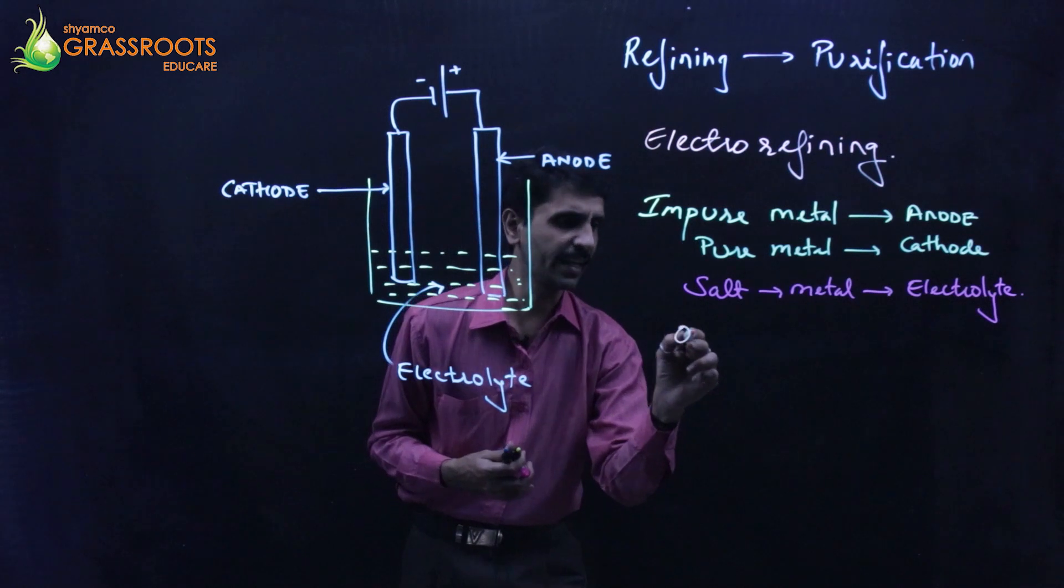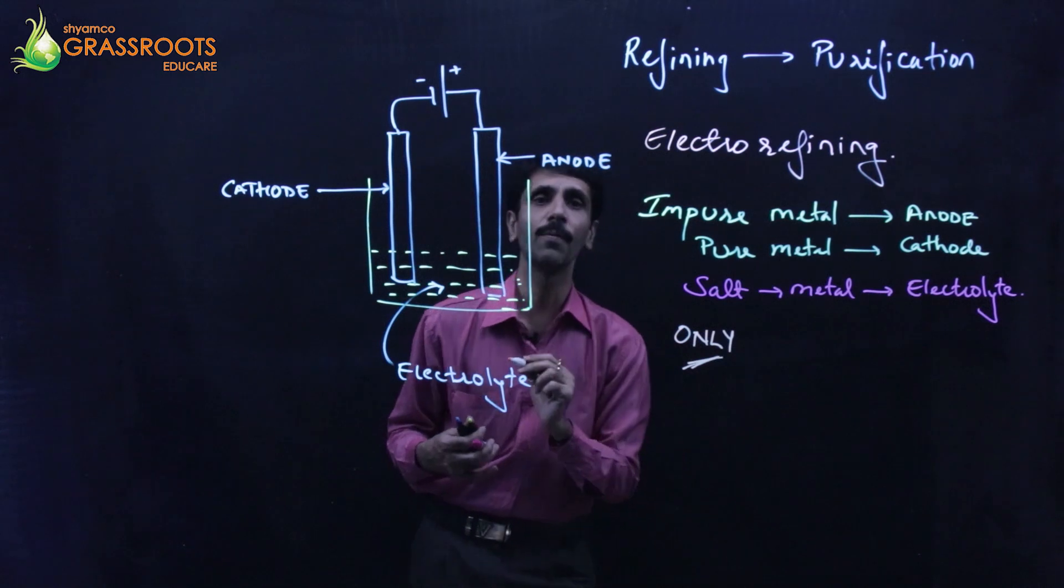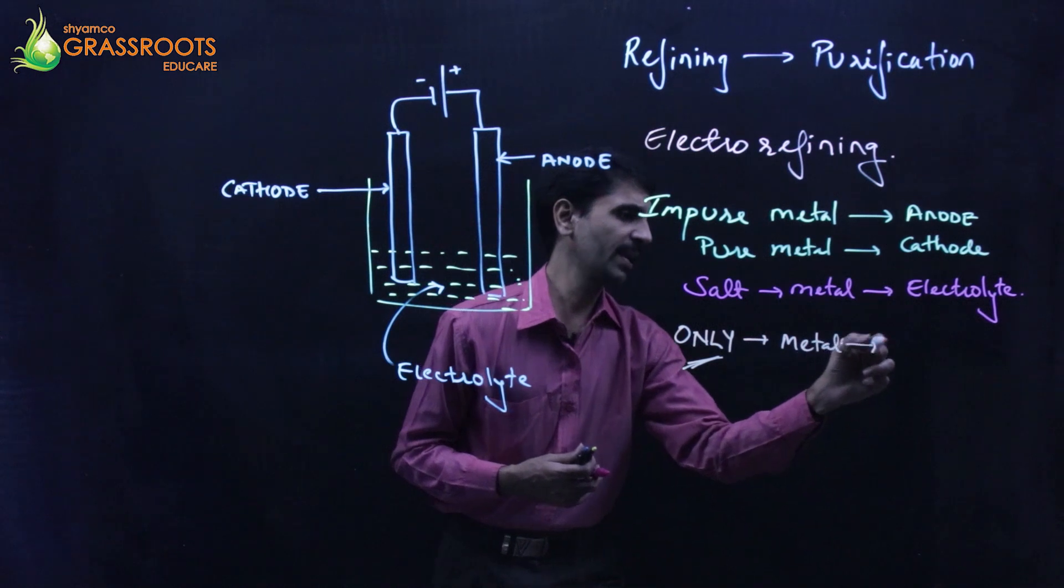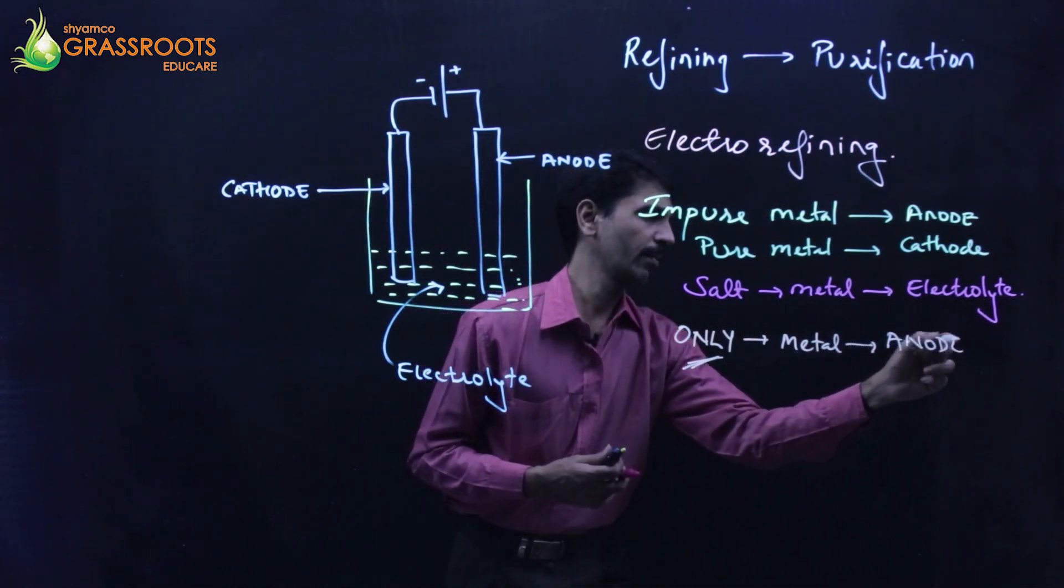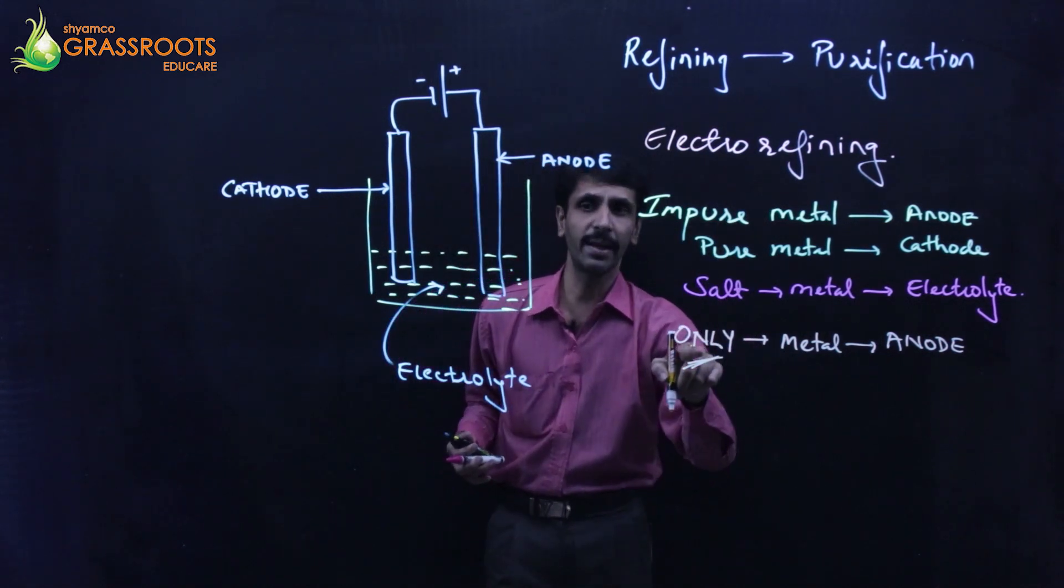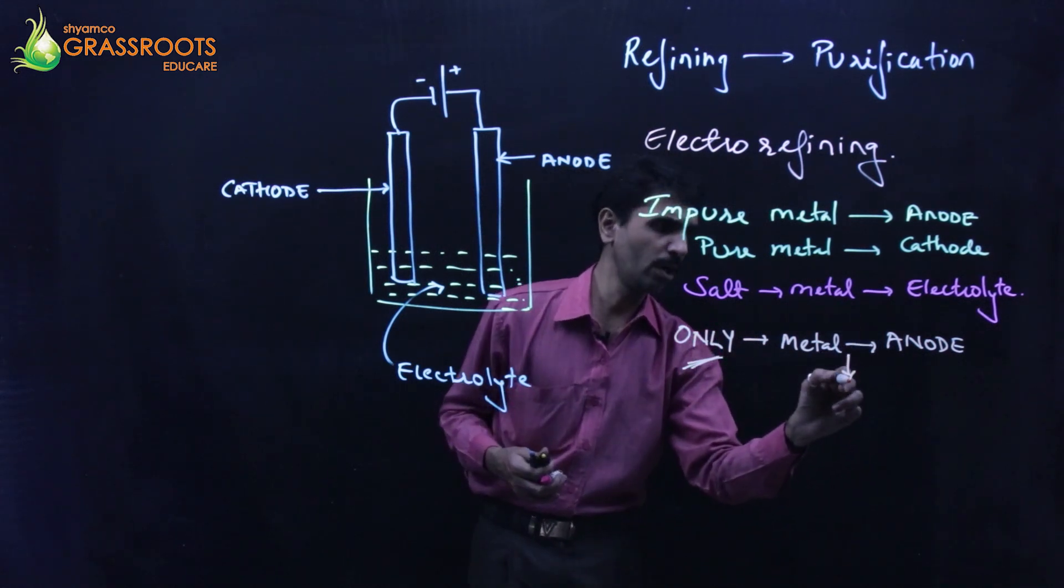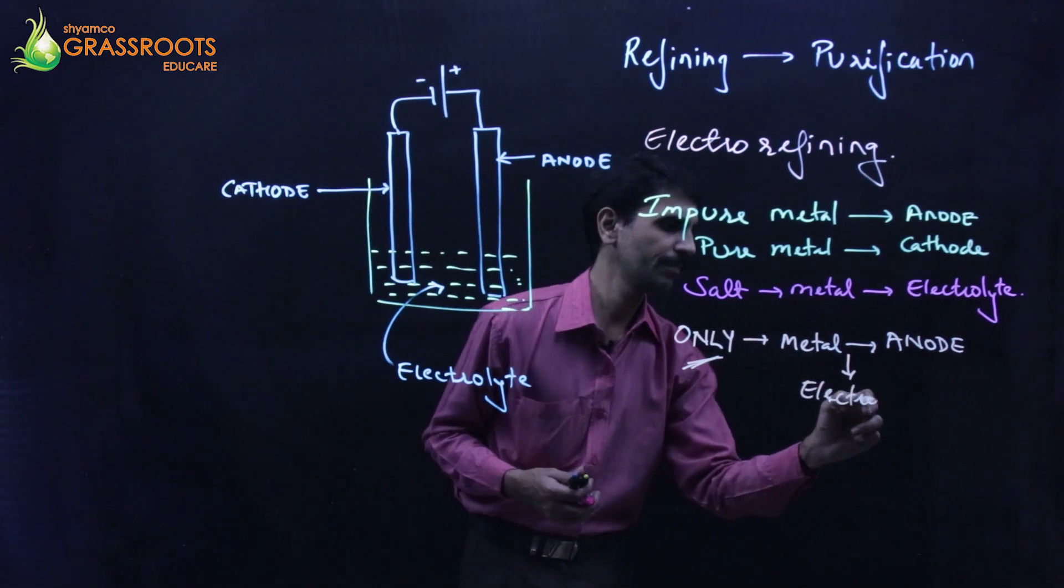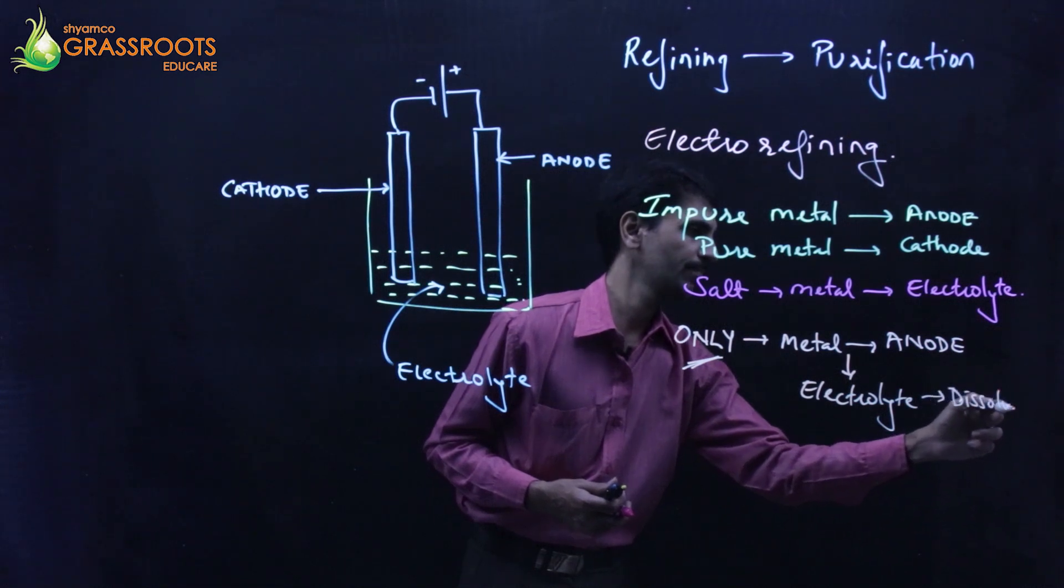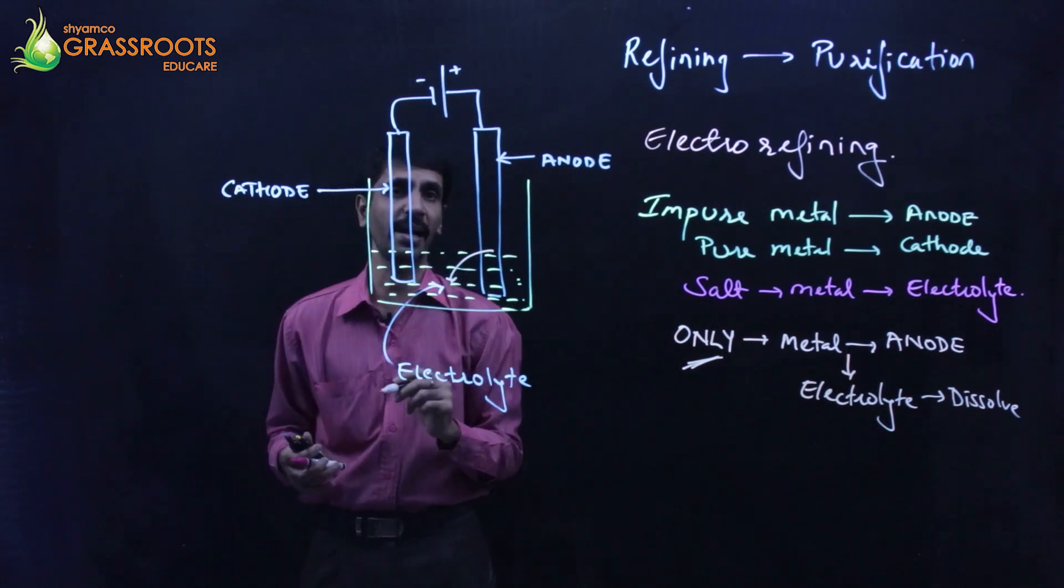Very simple it is. Only the metal from the anode - if you remember, anode contains impure metal, that means along with metal there is impurity also. But what I have written? Only. It means only the metal from the anode will dissolve in the electrolyte. Whatever pure metal that is there, that goes into this. It gets dissolved in the electrolyte.